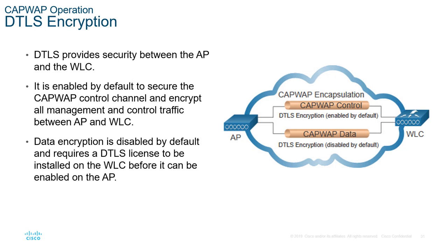DTLS provides security between access points and wireless LAN controllers, encapsulating data flowing between them. It is enabled by default to secure the control channel and encrypt management and control traffic. Data encryption is disabled by default and requires a DTLS license installed on the controller before it can be enabled on access points.